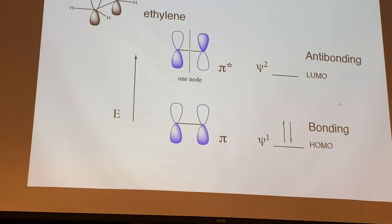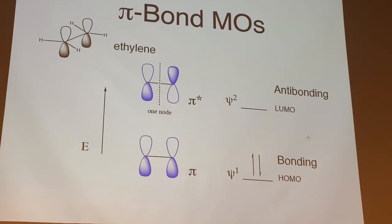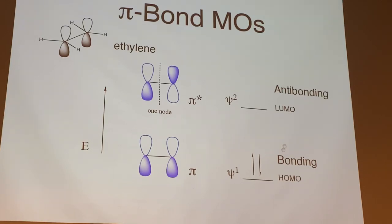Let's focus on the phases of the P atomic orbitals for the pi and pi star of ethylene. Psi one and psi two are the wave equations — the Schrödinger equations. The pictorial representation makes quantum mechanics much simpler. We have the bonding pi (in phase) and the anti-bonding pi star (out of phase). Only two electrons are involved in the pi bond; we're not looking at the sigma.